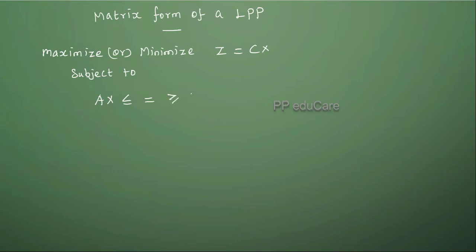Matrix form of a LPP or linear programming problem. The matrix form of a LPP is maximize or minimize Z equal to CX subject to the constraints AX less than or equal to, equal to, or greater than or equal to B and X greater than or equal to zero.